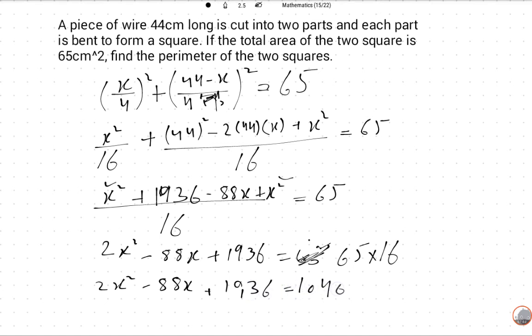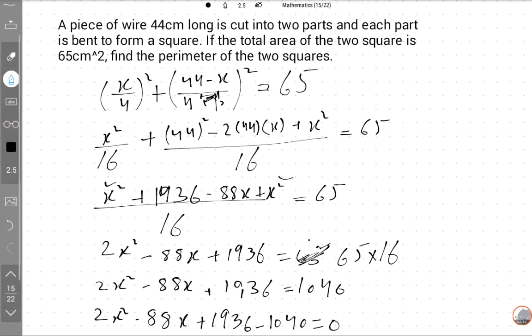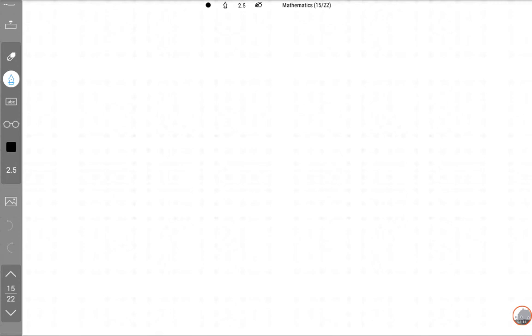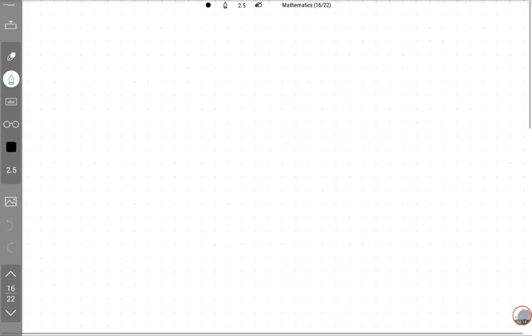In the next step, 88x plus 1936 minus 1040 is equal to 0. So, 2 will be common.